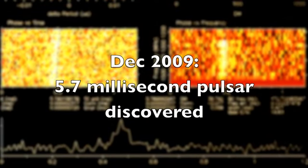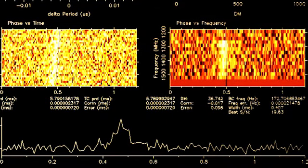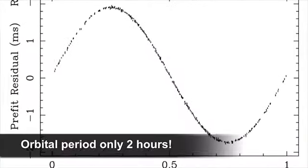In 2009 a 5.7 millisecond pulsar was discovered on our supercomputers and our colleagues soon realized that this star was orbiting another object every two hours.